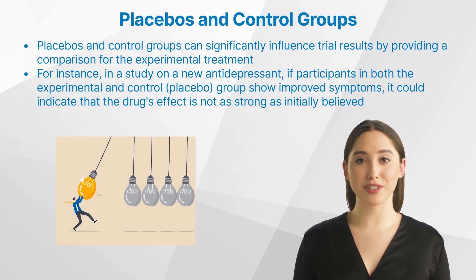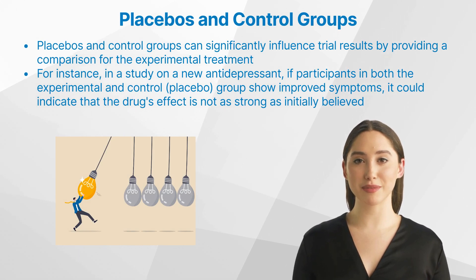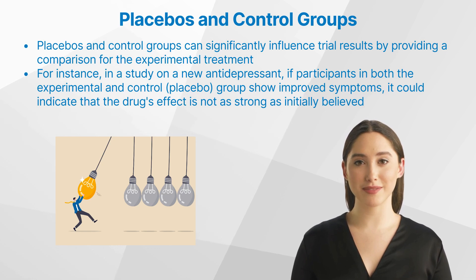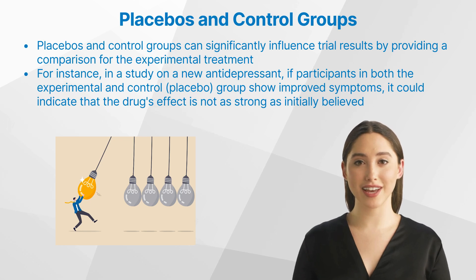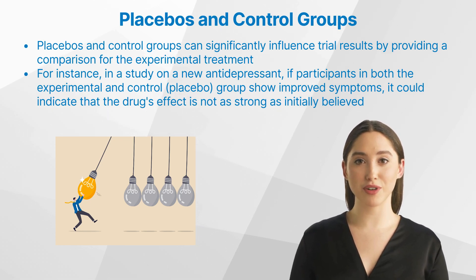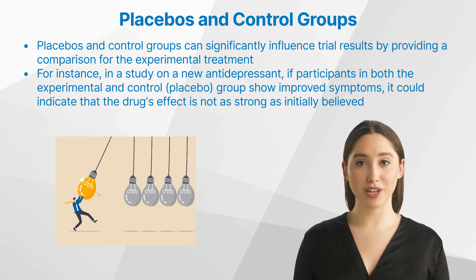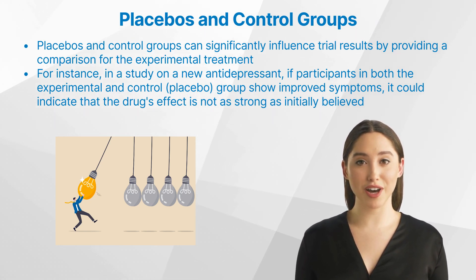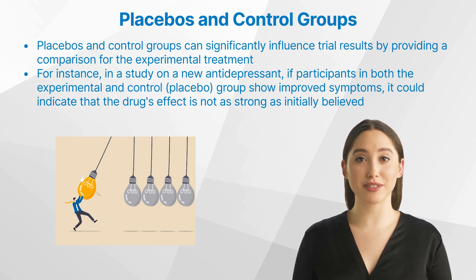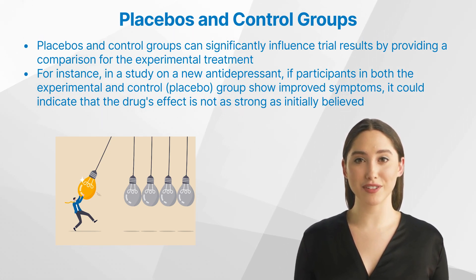Placebos and control groups can significantly influence trial results by providing a comparison for the experimental treatment. For instance, in a study on a new antidepressant, if participants in both the experimental and control placebo groups show improved symptoms, it could indicate that the drug's effect is not as strong as initially believed. Understanding the role of placebos and control groups is fundamental to deciphering the complex world of clinical trials.